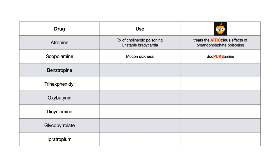Benztropine and trihexyphenidyl can both treat extrapyramidal side effects — benztropine more so than trihexyphenidyl. Trihexyphenidyl has more uses in Parkinson's disease. Both drugs cross the blood-brain barrier and get into the central nervous system, where their anticholinergic action treats extrapyramidal side effects.